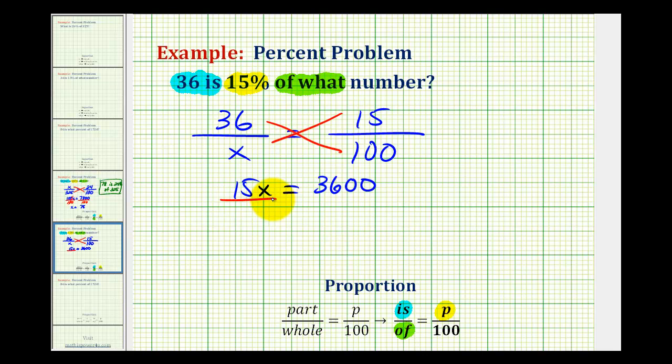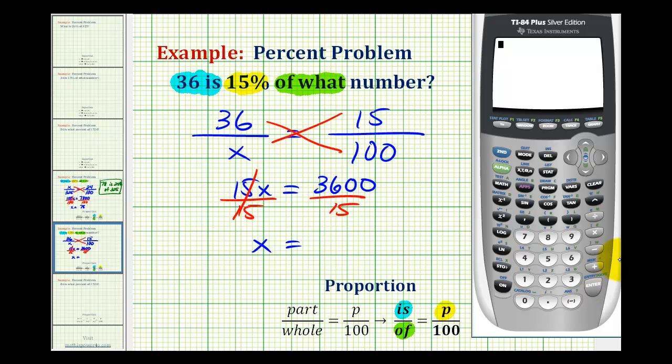Now we divide both sides by 15 to solve for x. So we have x equals 3,600 divided by 15. We have 240.